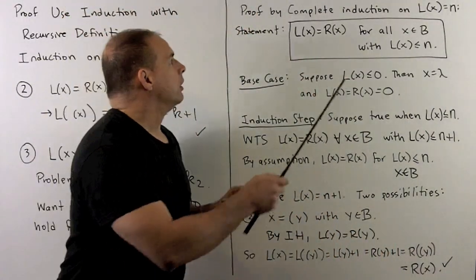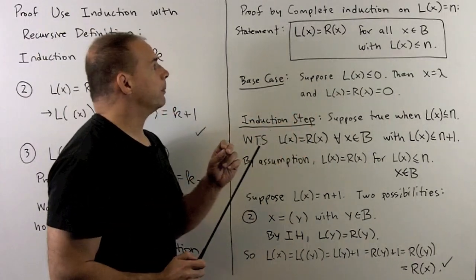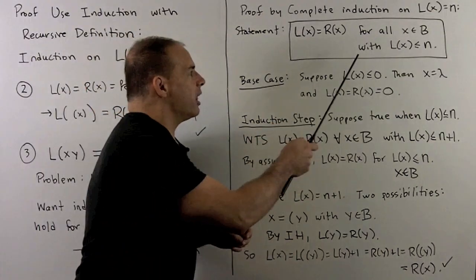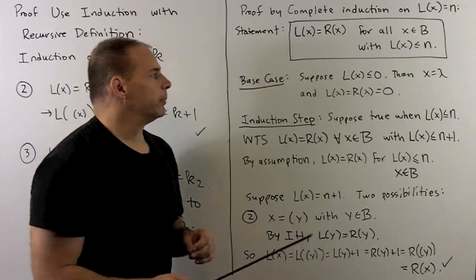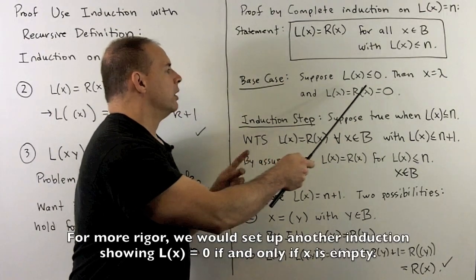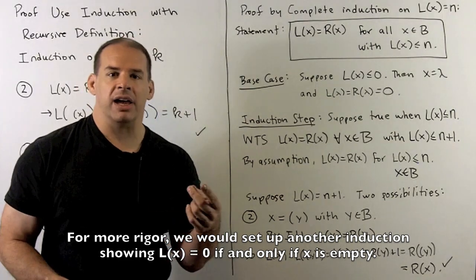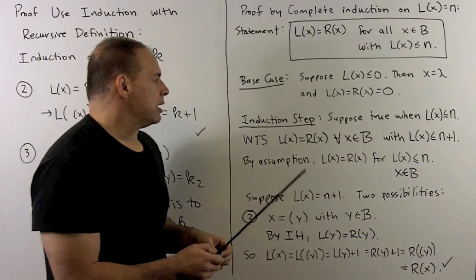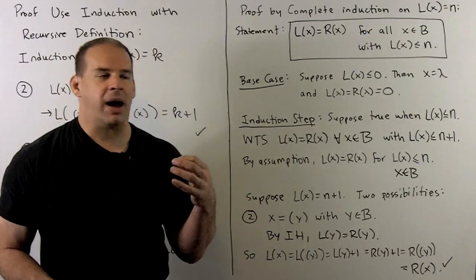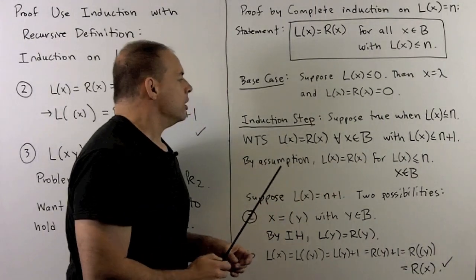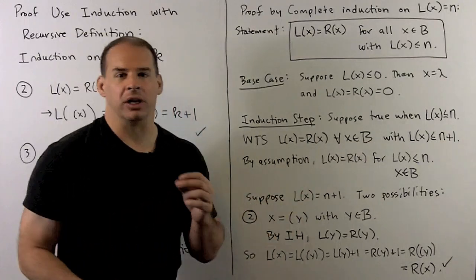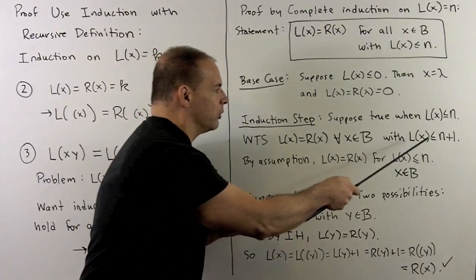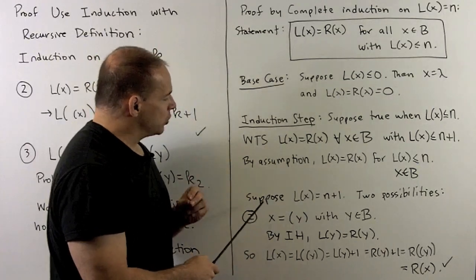For the proof itself, we announce we're going to do proof by complete induction on l(x) = n. Our induction statement: l(x) = r(x) for all balanced strings x with l(x) ≤ n. For the base case, suppose l(x) ≤ 0. The only string satisfying this condition is the empty string, so l(λ) = r(λ) = 0, and our base case holds. For the induction step, we assume the induction hypothesis is true when l(x) ≤ n, and want to show the statement holds when l(x) ≤ n+1. By assumption most of this is done; we only need to show it holds when l(x) = n+1.